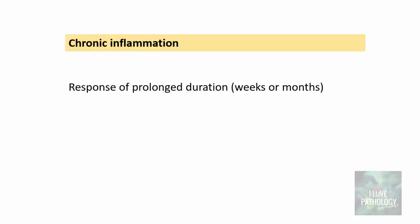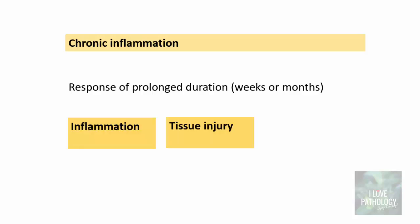What is chronic inflammation? Chronic inflammation is basically a response of prolonged duration — in contrast to acute inflammation where the response is of immediate duration within days. In this case, the response is of prolonged duration, ranging from weeks to months, where there will be inflammation, there will be tissue injury, and there will be attempts at repair.